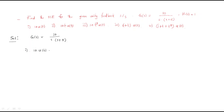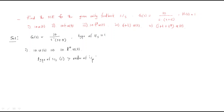First input is 10·u(t). The type of system is 1. We can write 10·u(t) as 10·t⁰·u(t), so the order of input is 0. Since the type of system (1) is greater than the order of input (0), the steady-state error is 0.